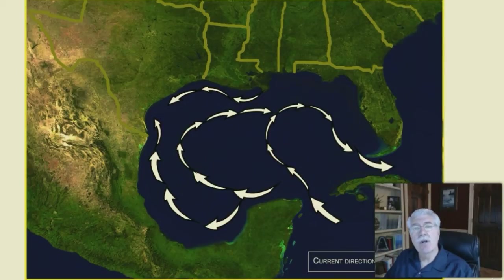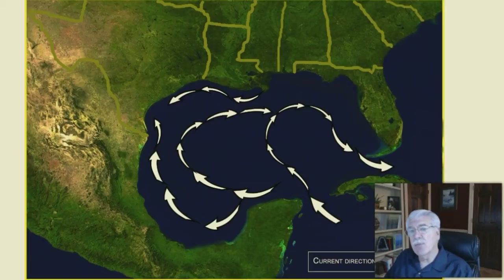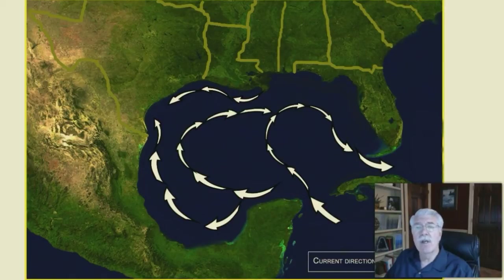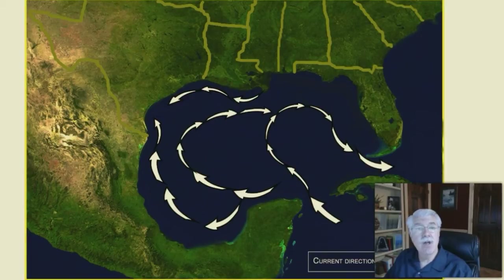Currents move throughout the Gulf, forming big loops. These currents help create areas where water from the bottom rises to the surface. When water rises this way, it's called upwelling, and it mixes nutrients in the water. The increase in nutrients in surface waters enables primary producers, such as phytoplankton, to grow and become food for zooplankton and filter feeders, such as the giant whale shark and Bryde's whale.